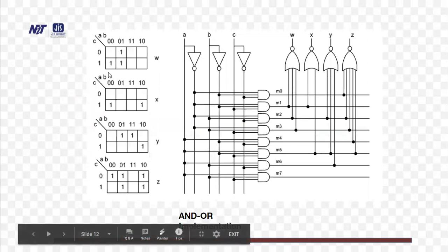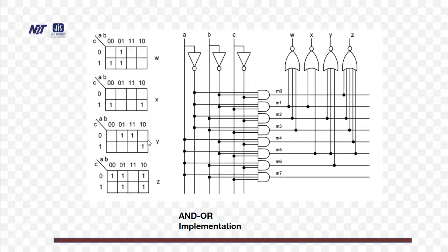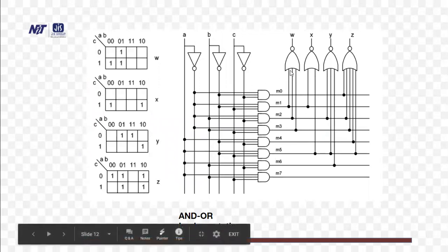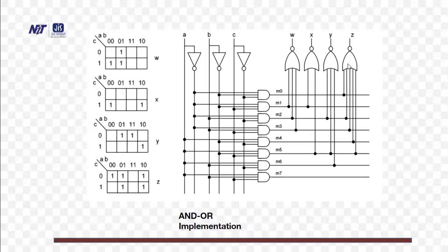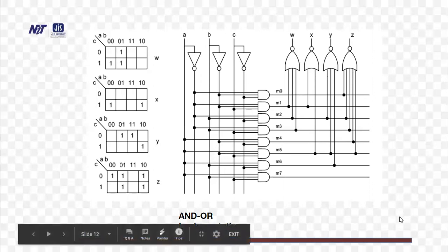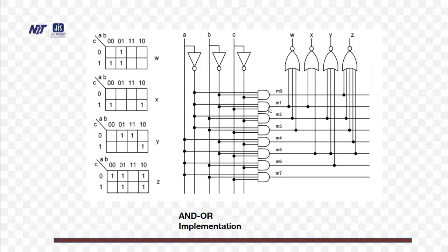By Karnaugh map solving, this is the output for W, then X, then Y, then Z. These are the input AND terms, and this is the output OR term with inverted — that is 2 nodes. The corresponding structure is shown. For W, it is taking from M1, M2, and M3, as shown here. Similarly, X output is taken from M1 and M5, as shown, and so on. The AND planes are connected to OR planes. The AND plane is on the input side and the OR plane is on the output side.